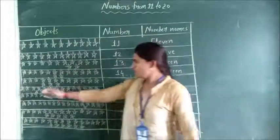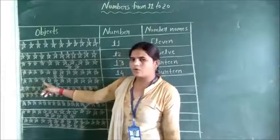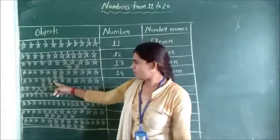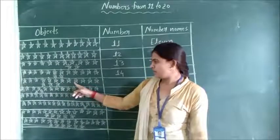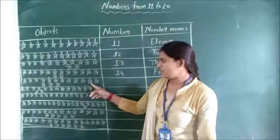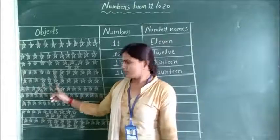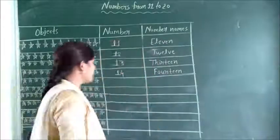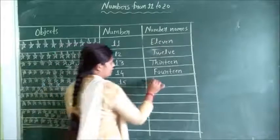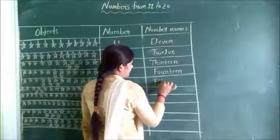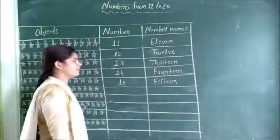Next. Count: 1, 2, 3, 4, 5, 6, 7, 8, 9, 10, 11, 12, 13, 14, 15. How many stars? 15. Write here: 1, 5 — 15. F, I, F, T, E, E, N. Fifteen. 15. Next.